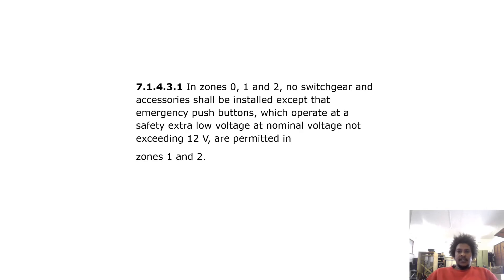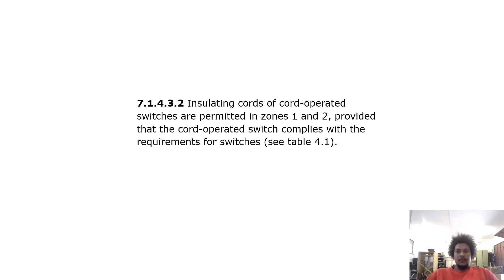Switchgear and control gear in zones 0, 1 and 2: no switchgear or accessories shall be installed, except that emergency push buttons which operate at SELV at a nominal voltage not exceeding 12 volts are permitted in zones 1 and 2. Insulating cords of cord-operated switches are also permitted in zones 1 and 2, provided that the cord-operated switch complies with requirements for switches — see Table 4.1.